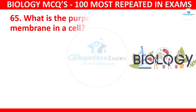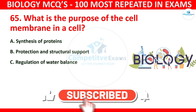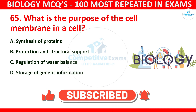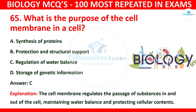Question number 65: What is the purpose of the cell membrane in a cell? The options are synthesis of proteins, protection and structural support, regulation of water balance, or storage of genetic information. The correct answer is C: regulation of water balance. The cell membrane regulates the passage of substances in and out of the cell, maintaining water balance and protecting cellular contents.